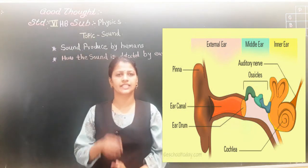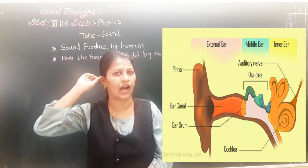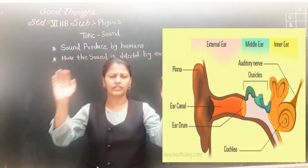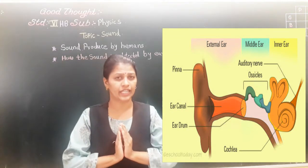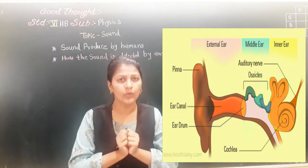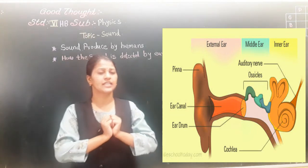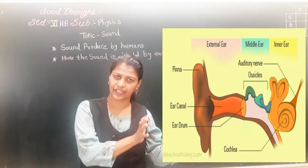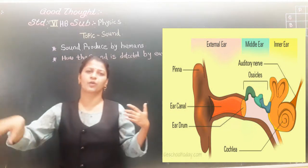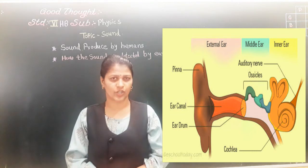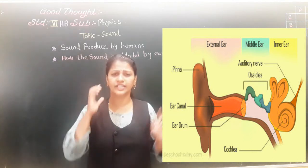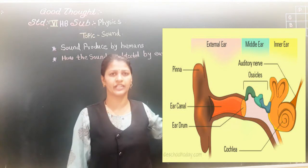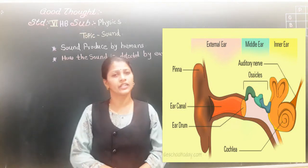The outer ear — this part is called the pinna. The function of the pinna is to collect all the sound around you. Like water stored in a dam is provided through a canal to particular villages, all the sound is collected in the pinna and passed through the ear canal from the middle ear.